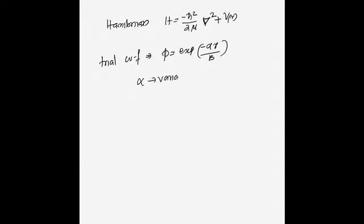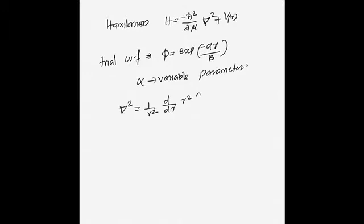In the variational method we need a variational parameter, and here α itself serves as that parameter. Since φ depends only on R, when finding ∇² in the Hamiltonian we do not need to worry about the θ or φ parts — we need only the radial portion of the Laplacian: (1/r²) d/dr (r² d/dr).